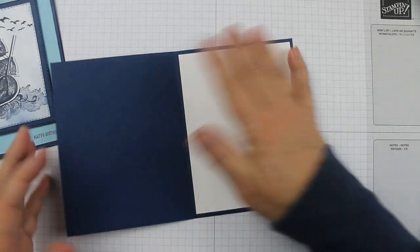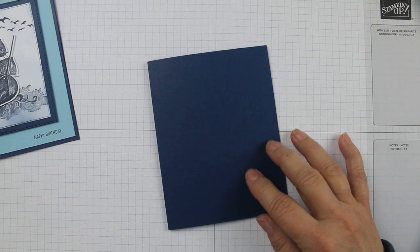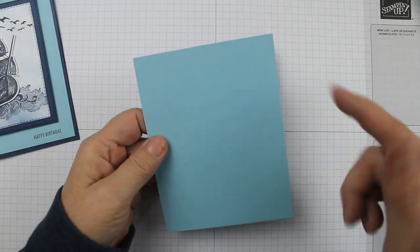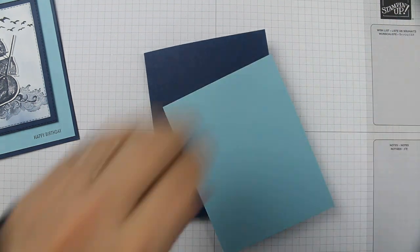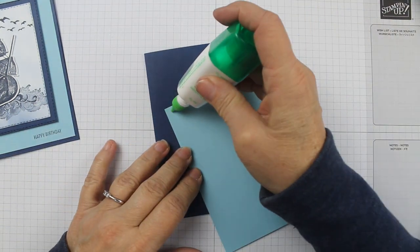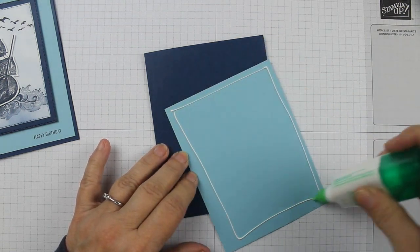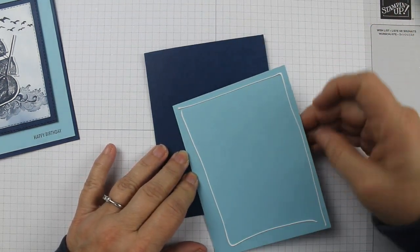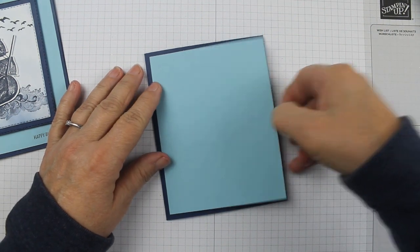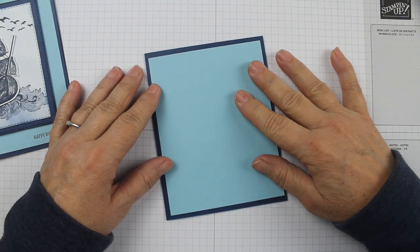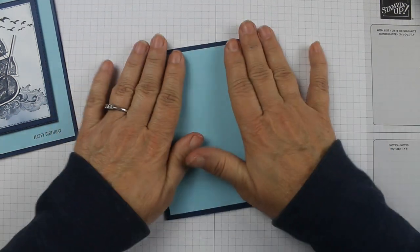Then I took a piece of Balmy Blue cut at 5.25 by 4 inches and I glued it to the front. I glued this to the front and centered that on there nicely. Then we have our card base built, our card base and our card front.